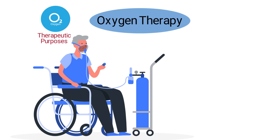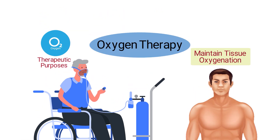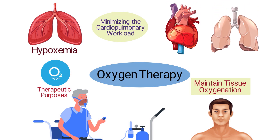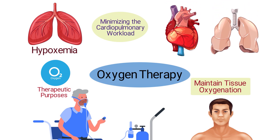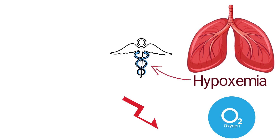Oxygen therapy is the process of administering oxygen for therapeutic purposes. The primary goal of delivering oxygen therapy is to maintain tissue oxygenation throughout the body. This helps prevent hypoxemia while minimizing the cardiopulmonary workload so that the heart and lungs can function properly.